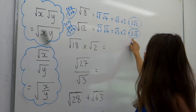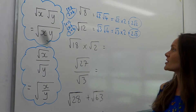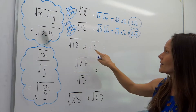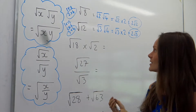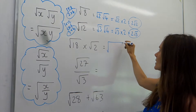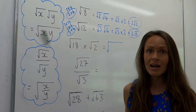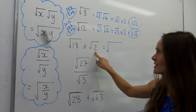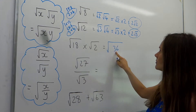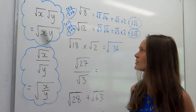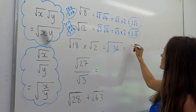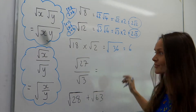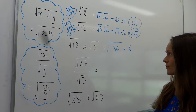Now we're going to use the rule the other way around. If I'm multiplying two roots together, it's the same as square rooting those two numbers multiplied together. So 18 multiplied by 2 is 36, and 36 is a square number. The square root of 36 is just 6, so that's the answer.